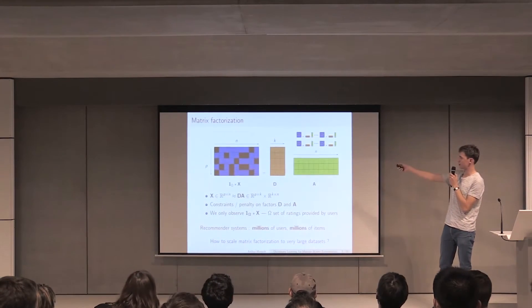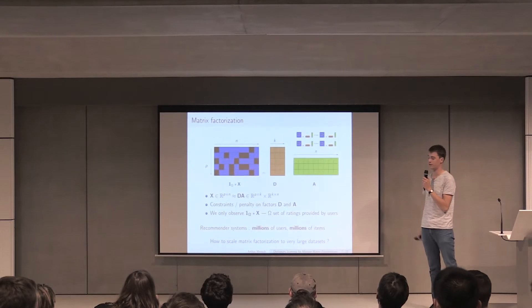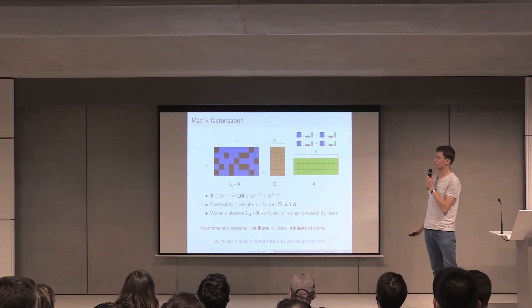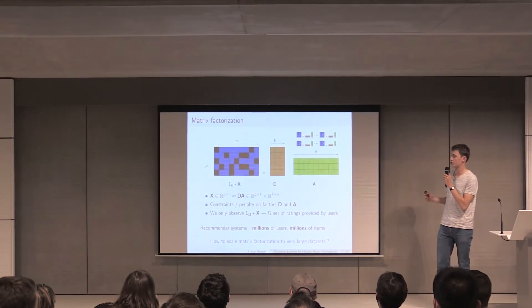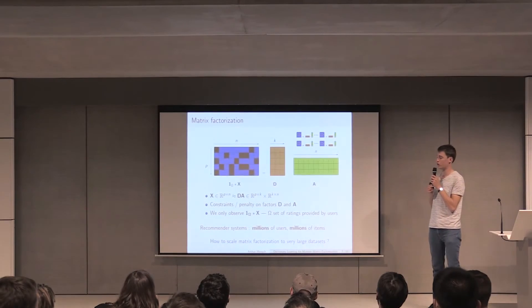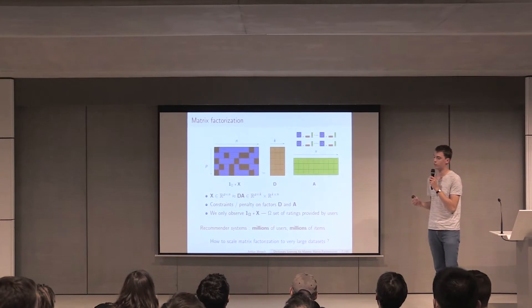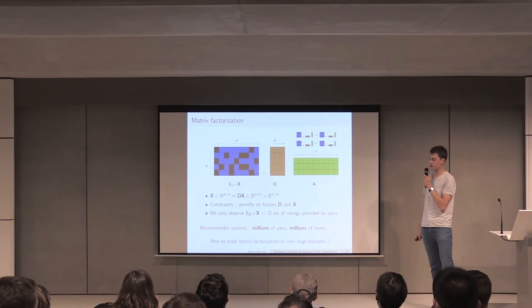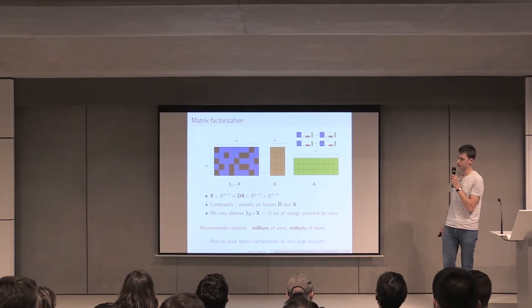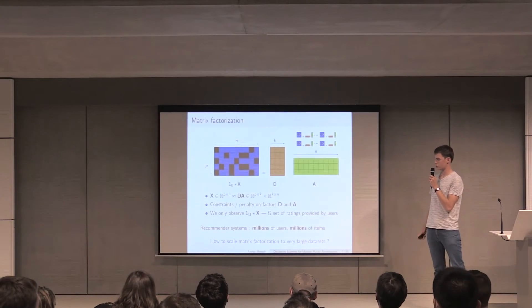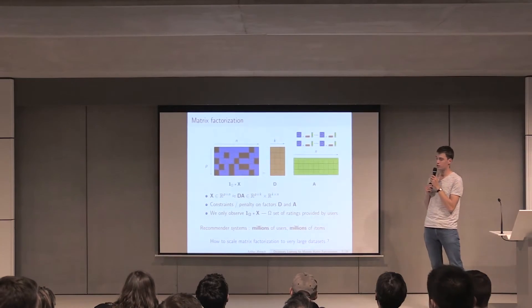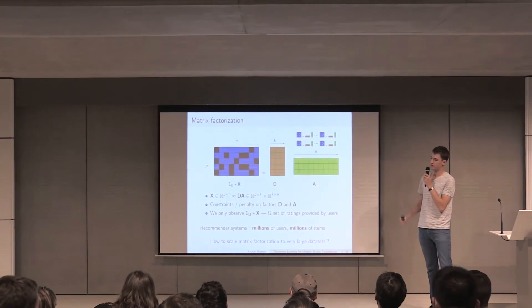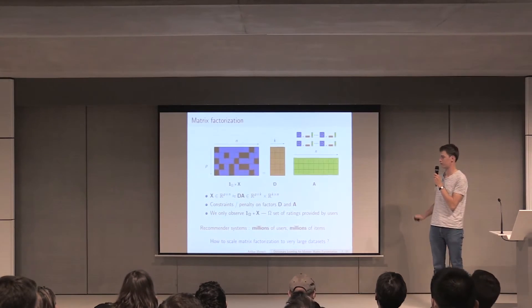Now, the learning problem that arises here is how to estimate the representative vectors from known ratings and how to use them to predict unknown ratings. Basically, if you take all of these scalar products and gather them and use common vectors, you end up with a matrix factorization problem where you have a very large matrix X, of which you don't know every value, and you want to factorize it as a product of two small low-rank matrices, D and A. Optionally, you can add constraints and penalties on the factors D and A in order to prevent overfitting or to introduce some structure. It's important to notice that we only observe what I call the Omega star X, which is basically the masked matrix with only known ratings.